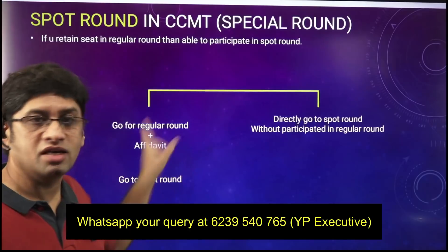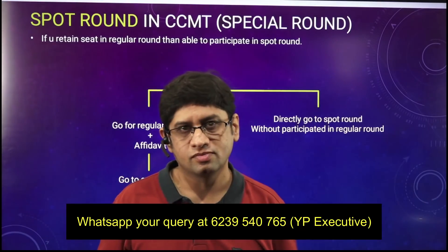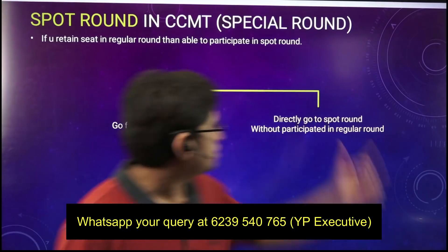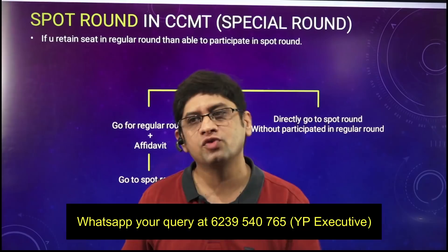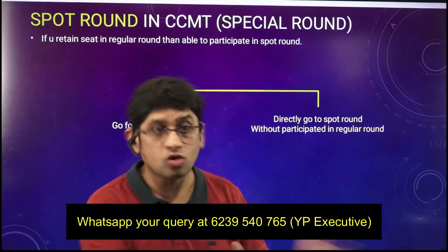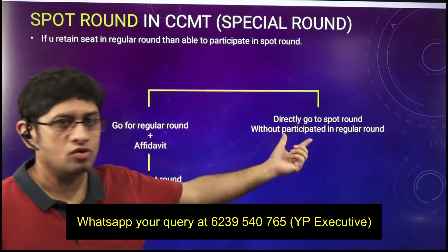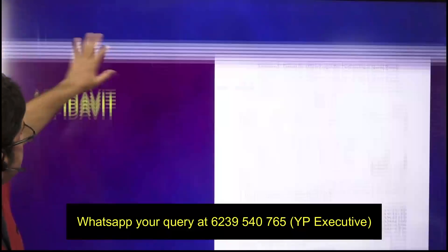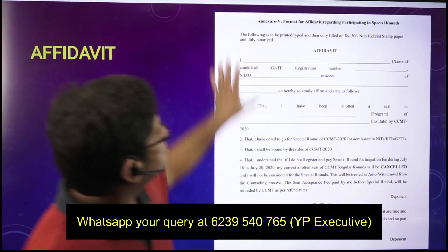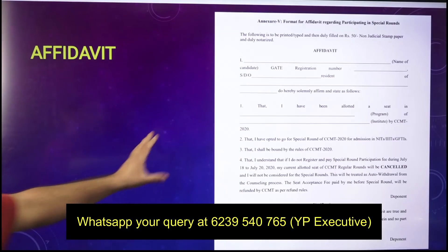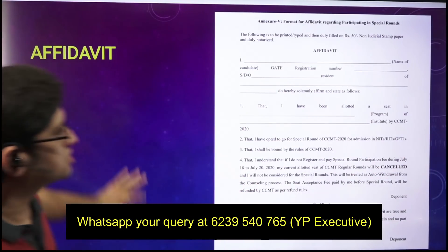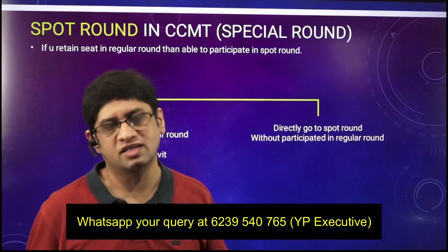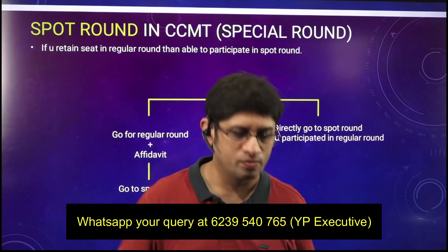In CCMT, even if you have taken something in the previous rounds, you can go for the spot round. So in COAP you cannot go directly to A, B, C, D rounds, but in CCMT you can go directly to the spot round. Those of you who have not so far used CCMT and have not got anything — please go directly for spot round. You have to fill the affidavit and you can directly go to spot round. This is what the affidavit is — this is what you have to fill to indicate that you want to go for spot round.